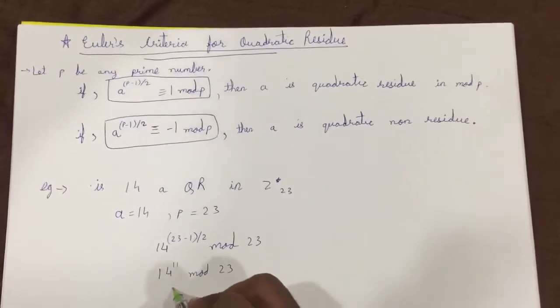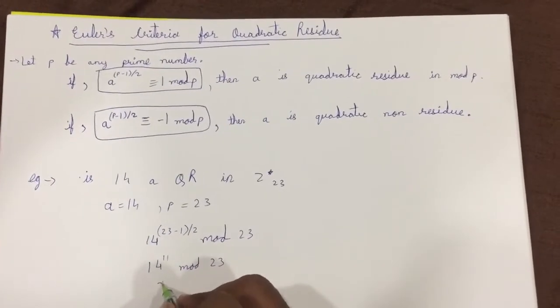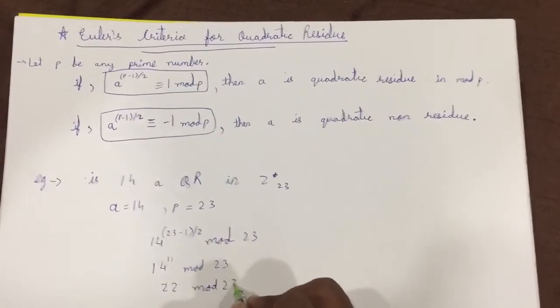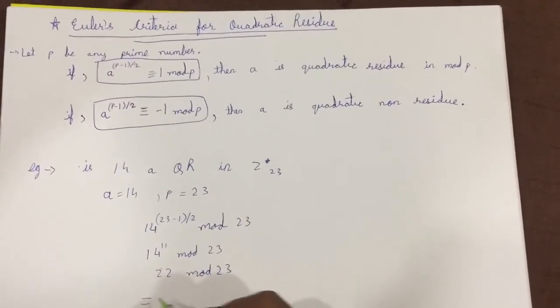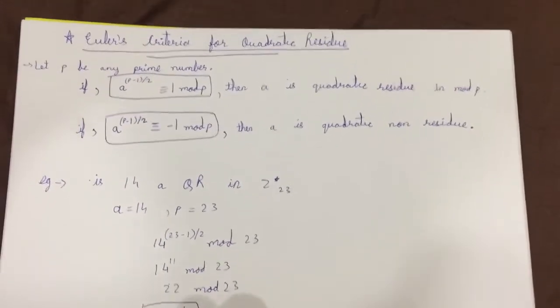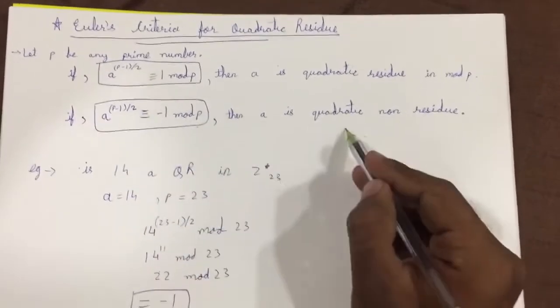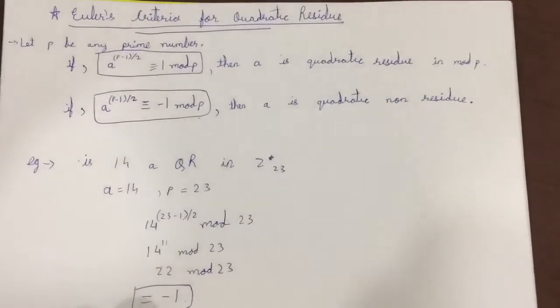If you solve it you would be getting answer as 22 mod 23 so it is equal to minus 1. So as it returned minus 1 according to the rule it states that it is a non residue. So 14 is quadratic non residue in Z star 23.